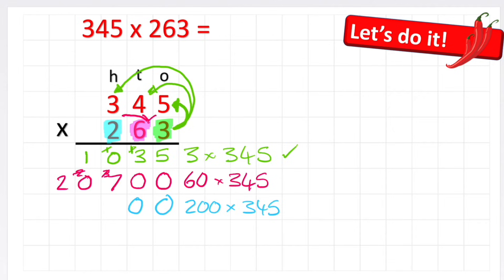Now I can start by multiplying my 2 times 5. 2 times 5 is 10, so small 1, big 0. 2 times 4 is 8, plus my 1 is 9. Cross out my 1. And then finally, 2 times 3 is 6. So the answer to 200 times 345 is 69,000.